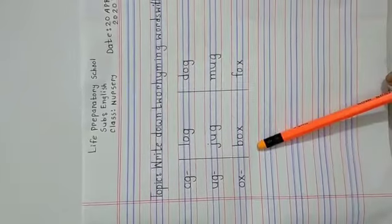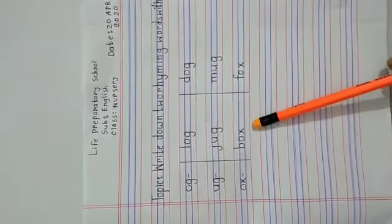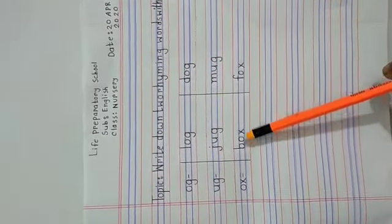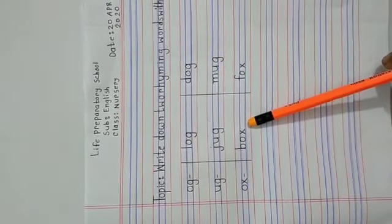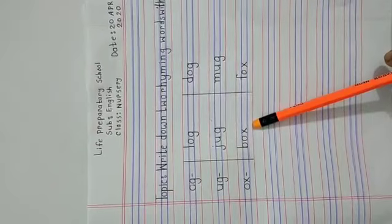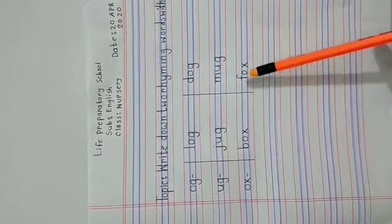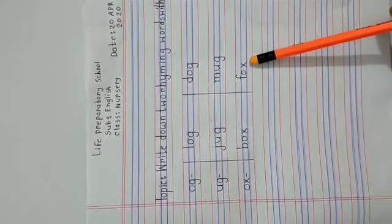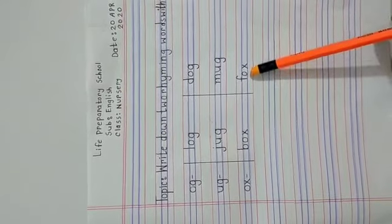Lastly, make word by using B before O-X, that is B-O-X, box. After this write F before O-X, F-O-X, fox.